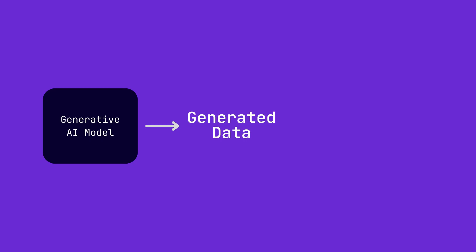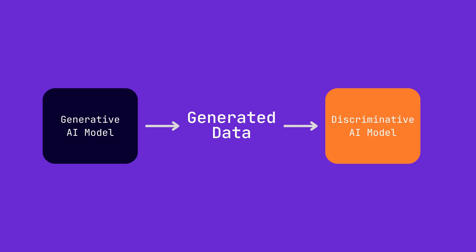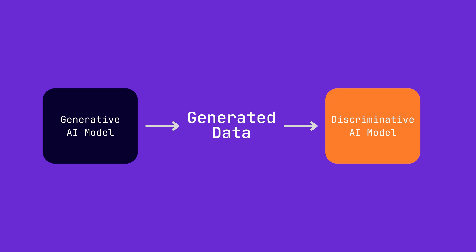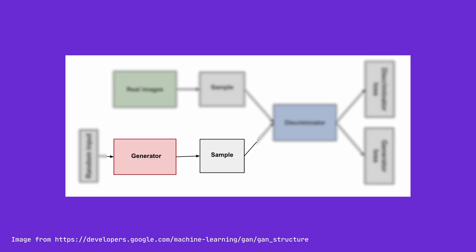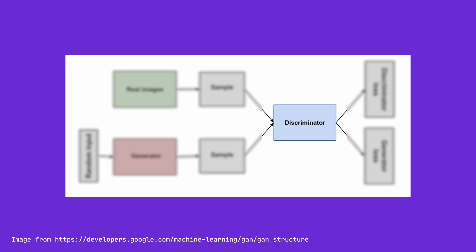For example, it can be used to train another model — a discriminative AI model. Famously, in the GAN architecture, there is a generator model that generates data and a discriminator model that decides which piece of data is real and which ones are fake. This way, both models get better over time.